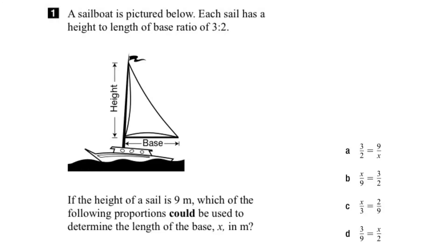So when they say the height and then the length is in the ratio 3 to 2, that means the height is the 3 and the length is the 2. So order is very important.